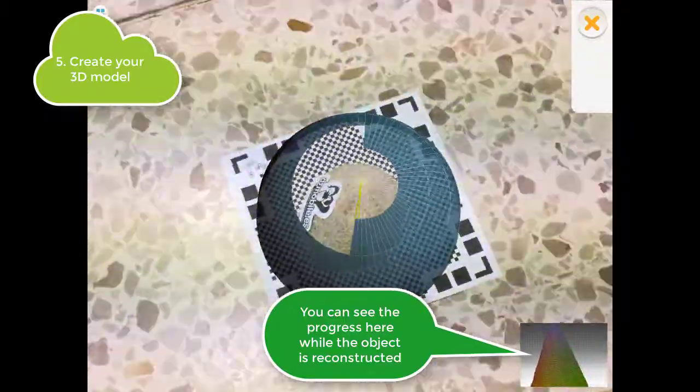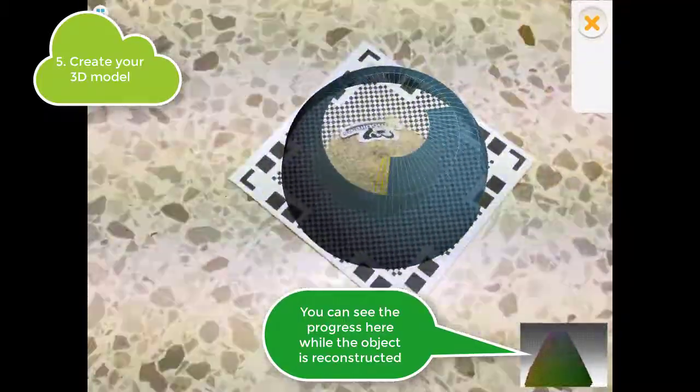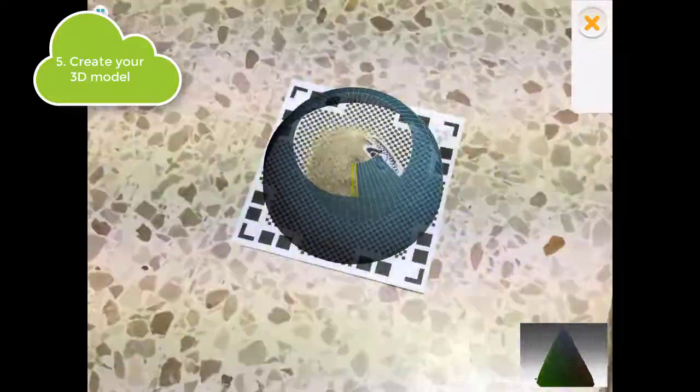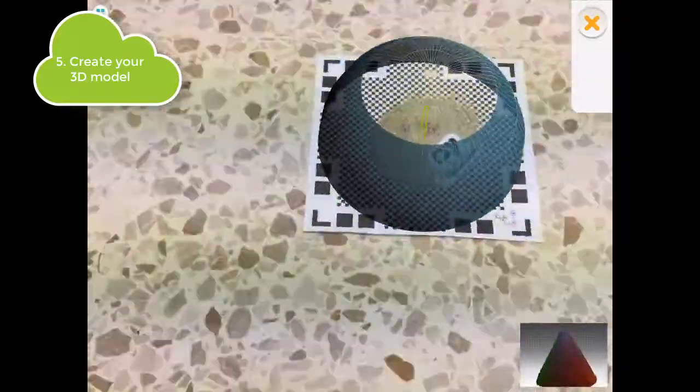In the lower right window you can see how your model is being built. You can go back at some point if parts of the dome are left incomplete.